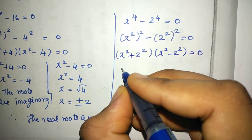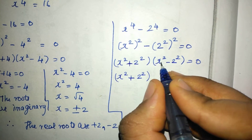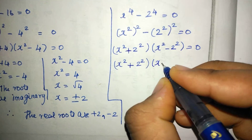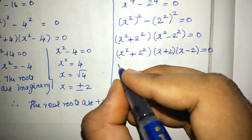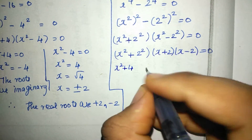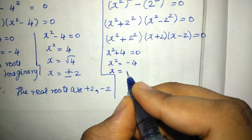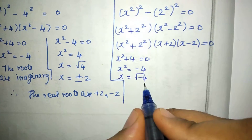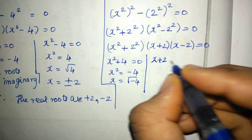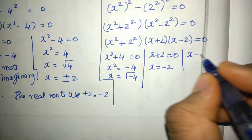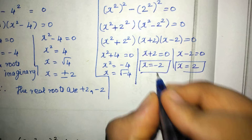From (x² − 4) = 0, we factor further as (x + 2)(x − 2) = 0. Setting each factor to zero: x + 2 = 0 gives x = −2, and x − 2 = 0 gives x = +2. So the real roots are x = −2 and x = +2.